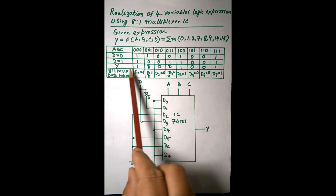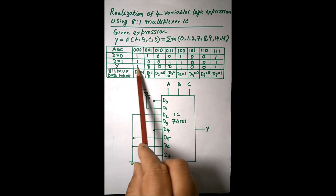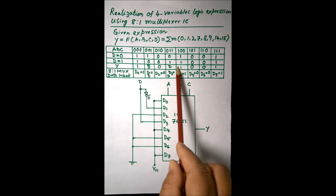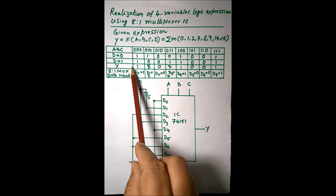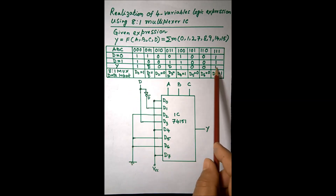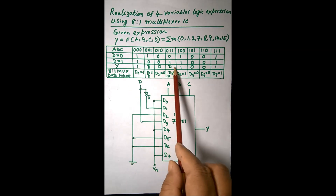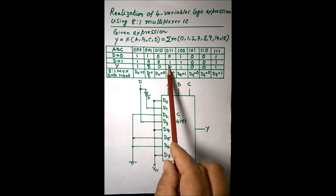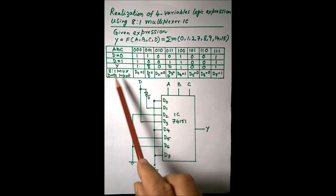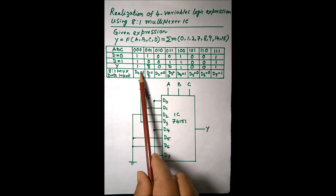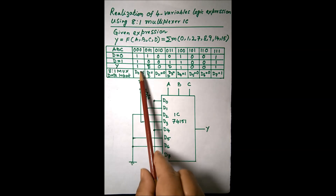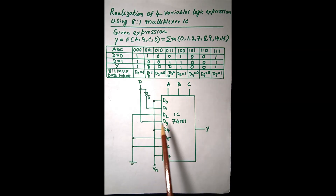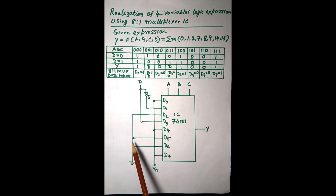We prepared the entered variable map table and got the values for y. According to the entered variable map, D and D-bar will appear from the input side. We substitute the corresponding values for D0 to D7 and draw the circuit diagram accordingly.